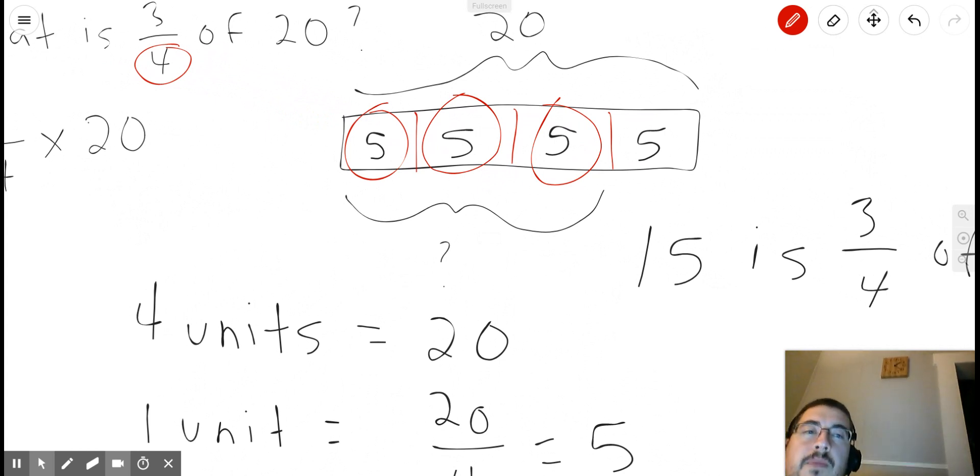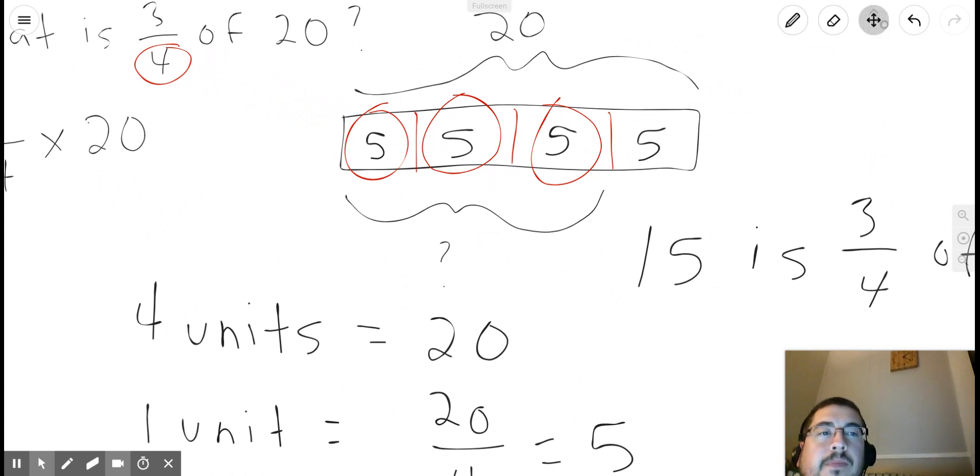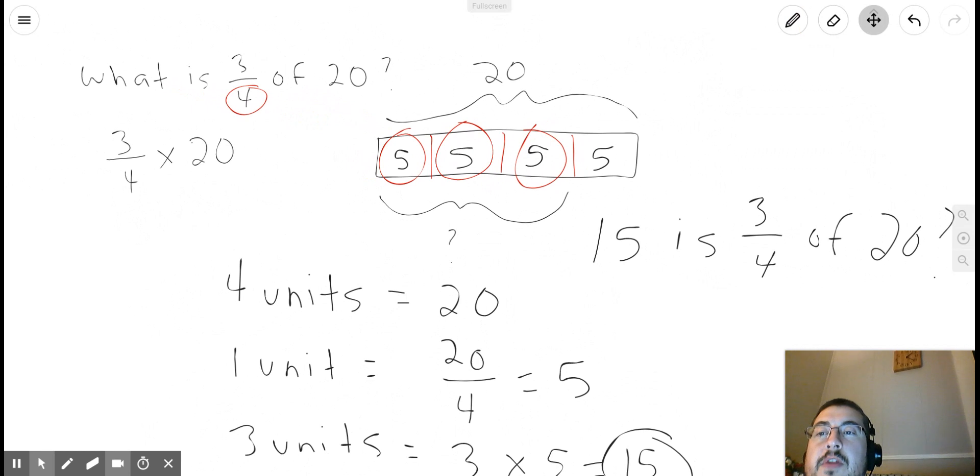five plus five is going to give us 15. So that's an example of how we can use a tape diagram to solve problems such as what is three-fourths of 20, or what is three-fourths times 20. 15.